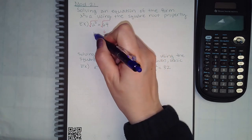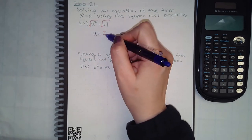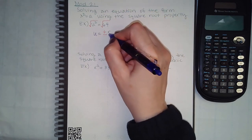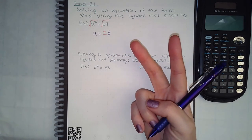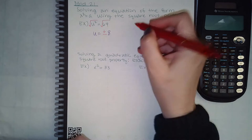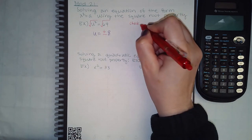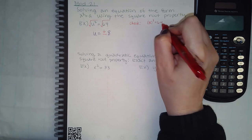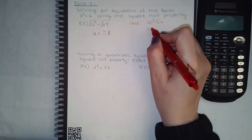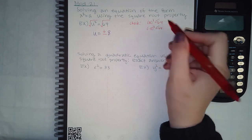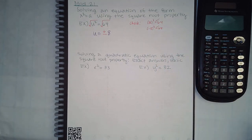The u squared and the square root cancel, and I get plus or minus whatever the square root of 64 is — in this case, 8. So I have two answers: positive 8 and negative 8 to check. We have 8 squared equals 64, which is true, and negative 8 squared equals 64, which is also true because a negative times a negative is a positive.